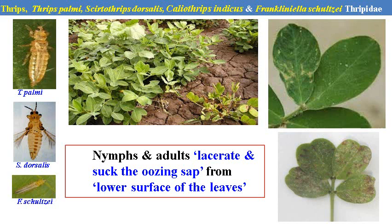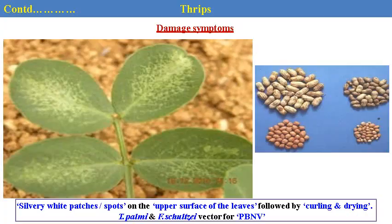These thrips cause very great damage in the initial stage. Thrips palmi and other species feed on the undersurface of the leaves. The initial damage shows white spots or silvery white patches observable on the upper surface of the leaves, followed by curling and crinkling of the leaves. As a vector of peanut bud necrosis virus, infected parts show small, poorly developing kernels inside the pods.